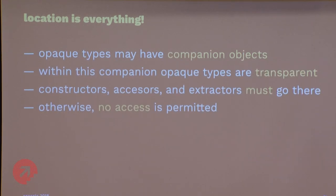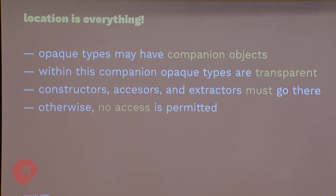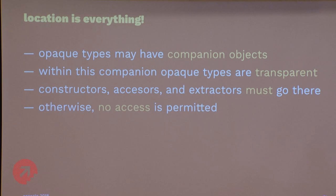The companion is the only legitimate place where the opaque type is willing to be less opaque. Anything you want to do with these types — constructors, accessors, validation — has to be in the companion. That's the one place you can do it; otherwise no access of any kind is permitted.